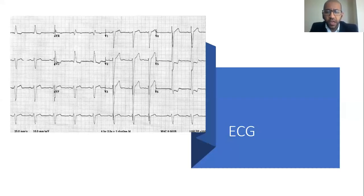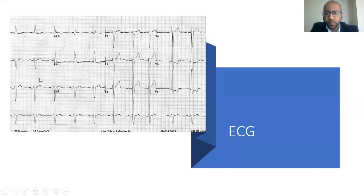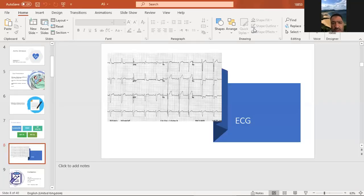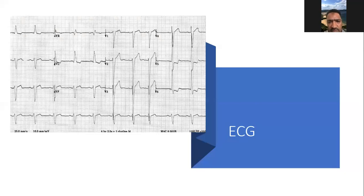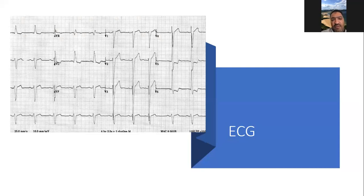Looking at the ECG — can someone from the faculty comment? This is Abubakr Khalil. So it appears to be sinus rhythm with what could be a left bundle branch block or partial left bundle branch block — the QRS duration doesn't look too prolonged. There are some strain patterns, ST elevation if this is left bundle, lateral ST depression in V5 and V6, which could be left ventricular strain or hypertrophy.